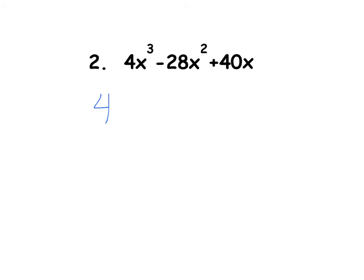So how many X's can you take? 3, 2, and 1. The most that you can take from all of them is just 1. And then of course we go ahead and write our leftovers. So 4 divided by 4 is 1, I took an X away, so there's now X squared. Negative 28 divided by 4 is negative 7, took an X away, so there's just 1. 40 divided by 4 is 10, took an X away, now there's no X's.